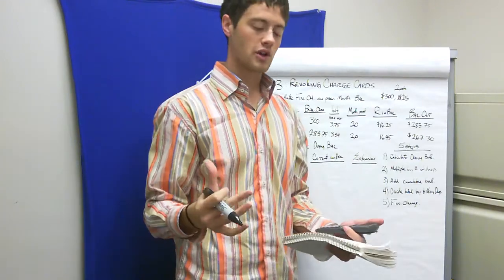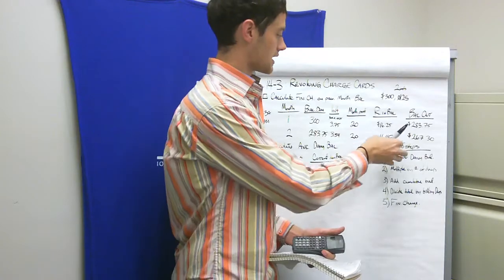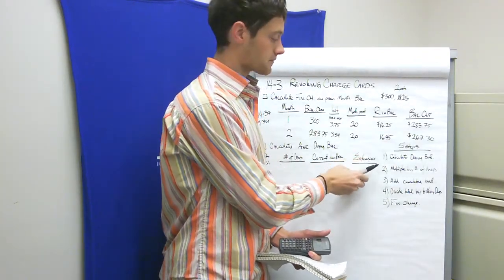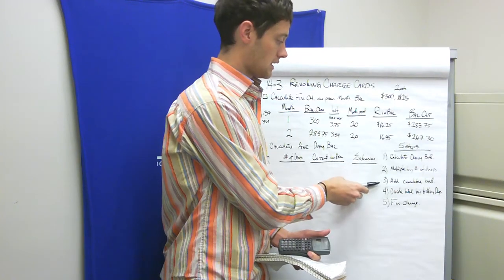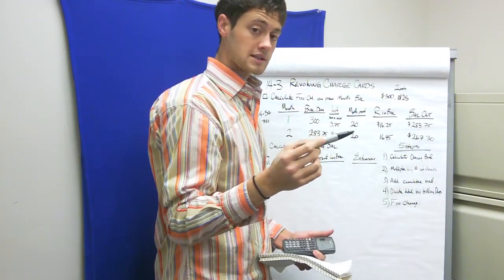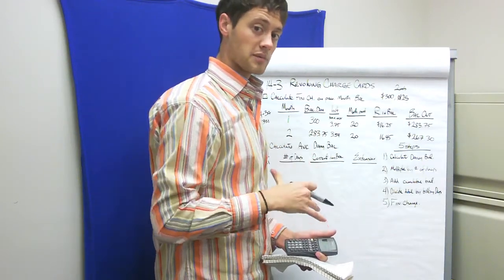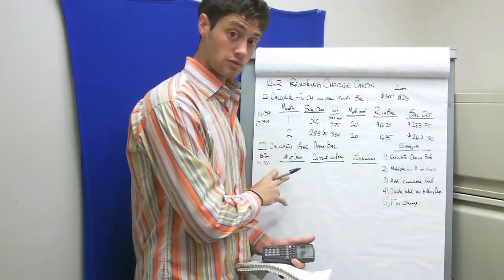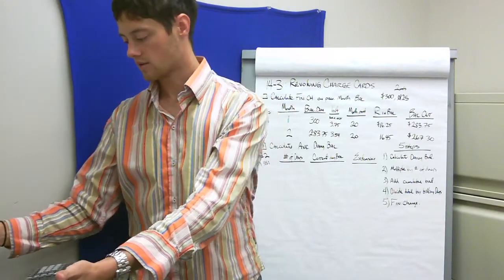The other one is how most credit cards do it, calculating your daily balance. They say there's five steps. You calculate your daily balance first, multiply that by the number of days it stayed the same. You add all that cumulative balance together and divide by the number of billing days, then multiply by your finance charge. The best way to see it is in number two of the extra practice problem. Let's walk through it.